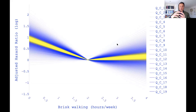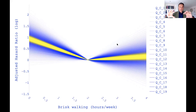The further you move from the reference, the larger the standard error — it is multiplied by the distance between the two points being compared. The confidence interval getting closer at two hours per week is happening by mathematical definition — nothing to do with how much data you have for that specific dose value.